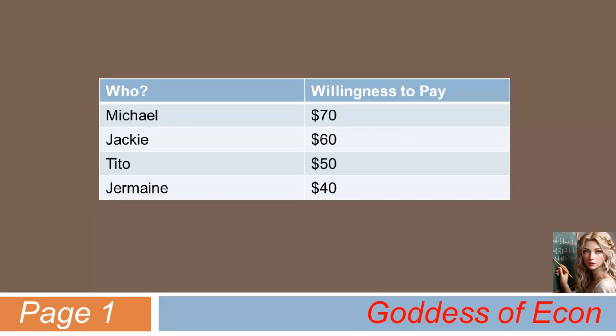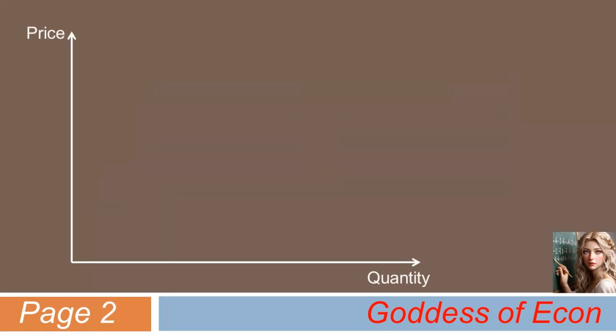Let's look at this graphically. If the item were sold at the price of $70, then there'd be only one buyer, namely Michael. So the quantity demanded at the price of $70 is just one. Now, if the item were sold at the price of $60, then the quantity demanded would increase to two, due to Jackie grabbing the item in addition to Michael.